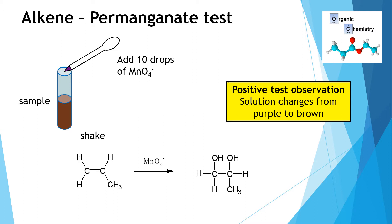Be aware that you can also carry out a positive test for an alkene using acidified permanganate — MnO4⁻/H⁺. In that case it would produce a colourless solution. But again, the positive test for an alkene with the permanganate test goes from purple to brown.